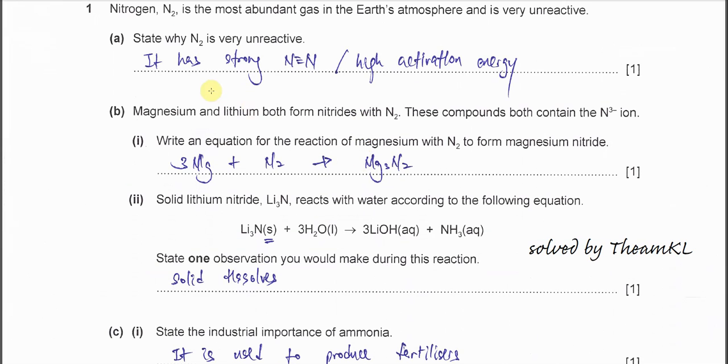Part B: Magnesium and lithium both form nitride with N2. These compounds both contain N3- ion. Write an equation for the reaction between magnesium with N2 which forms magnesium nitride. This one is very easy since it's 3 negative charge so it will form Mg3N2 because magnesium is 2+ and this nitride is 3-. Just balance it you get this equation.